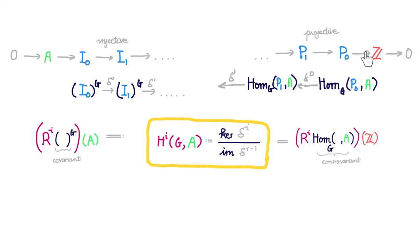If we take a projective resolution of Z and then apply this contravariant hom functor to it, then we'll get a cochain complex. And it turns out that the cohomology groups of this cochain complex are also exactly the cohomology groups of G with coefficient in A.